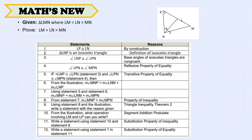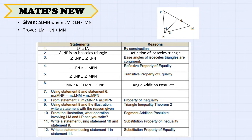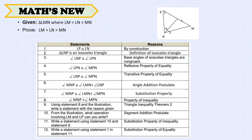Since angle LNP is congruent to LPN (statement 3) and angle LPN is congruent to angle MPN (statement 4), by the transitive property, angle LNP is congruent to angle MPN. From the illustration, the measure of angle MNP equals the measure of angle LNM plus the measure of angle LNP by angle addition. By substitution, angle MNP equals angle LNM plus angle MPN, so angle MNP is greater than angle MPN by the property of inequality.